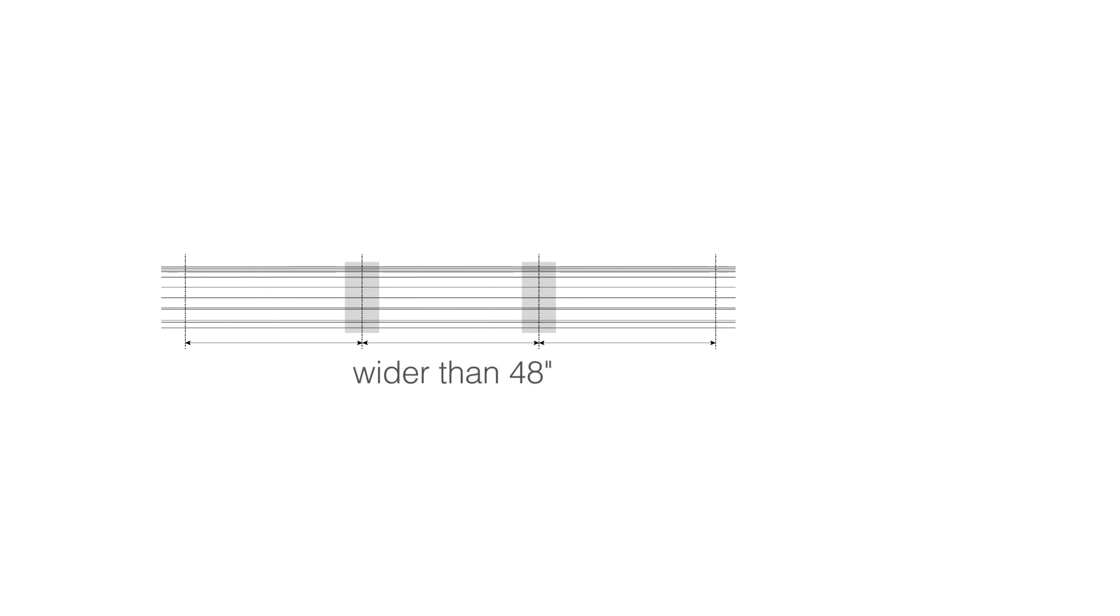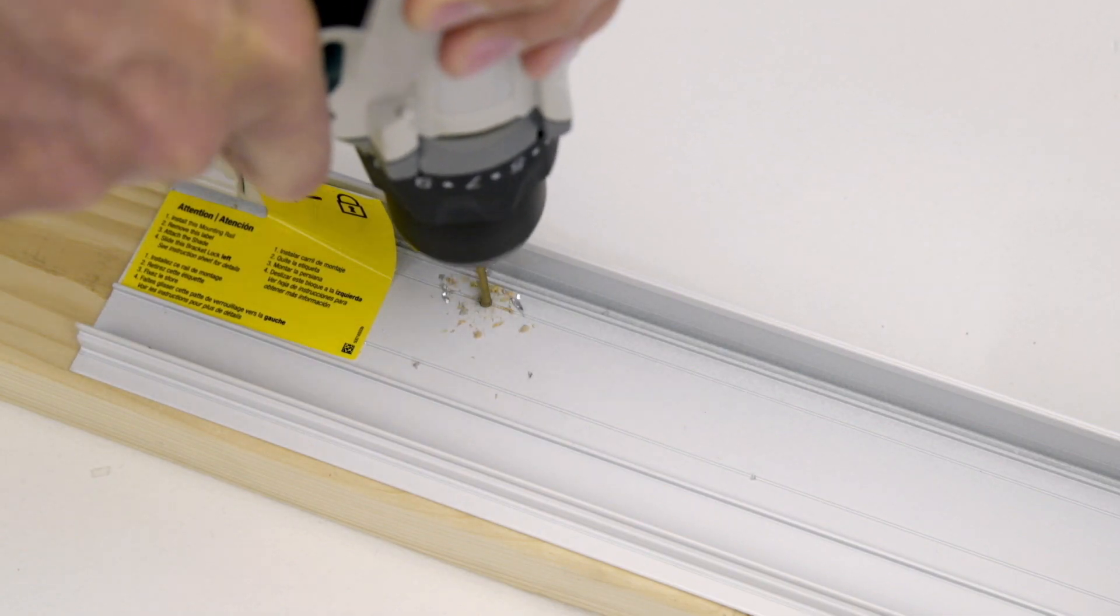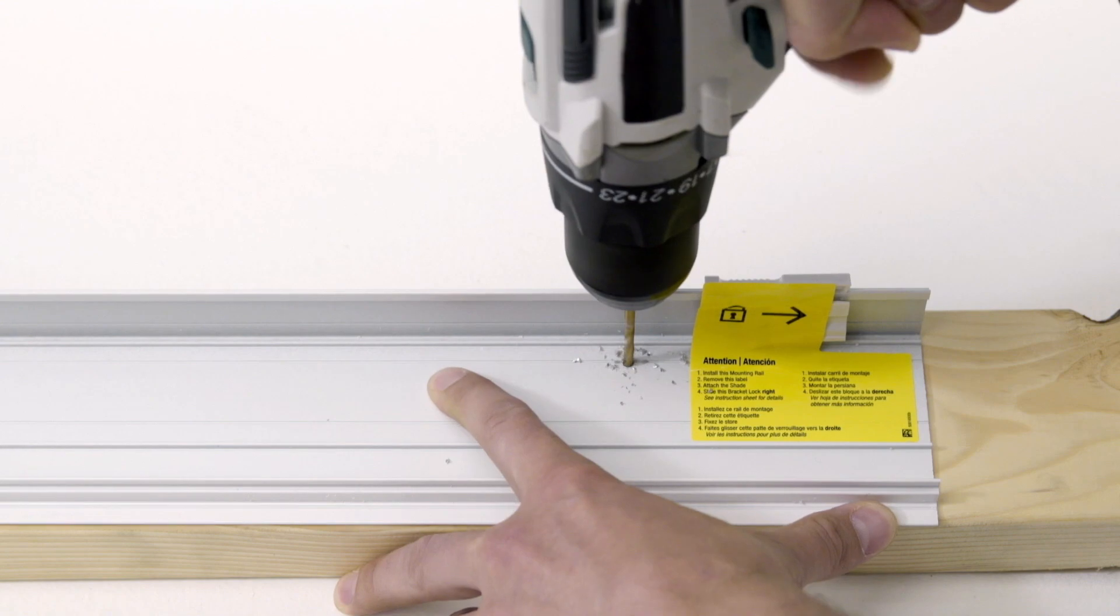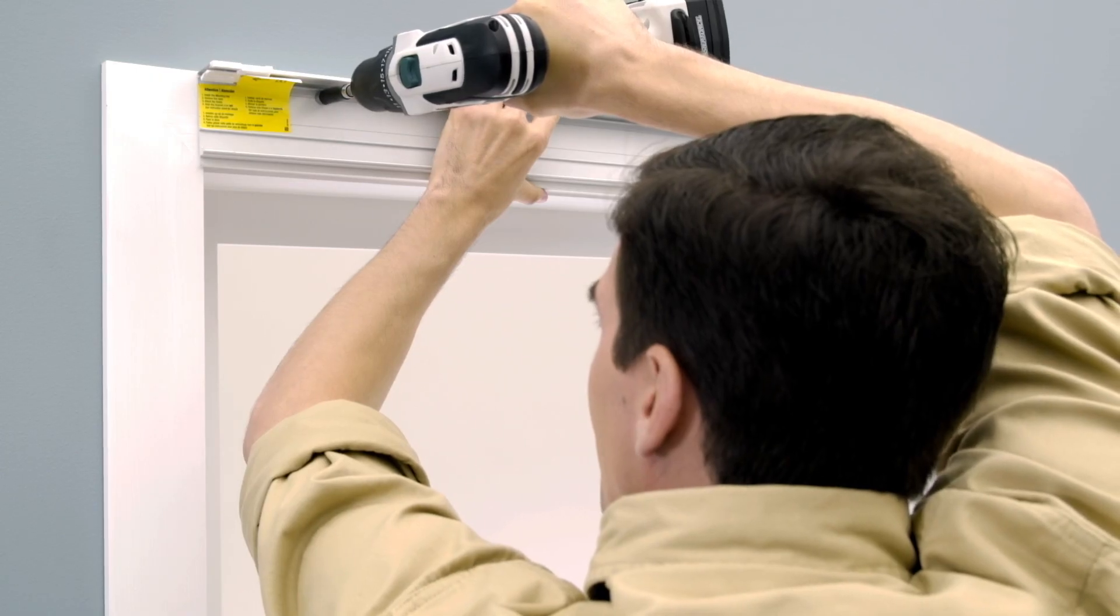Please note, shades wider than 48 inches will need two additional screws, equally spaced across the mounting rail. Using the pencil marks as a guide, pre-drill holes for the screws on the mounting rail. Install the mounting rail using the provided screws.